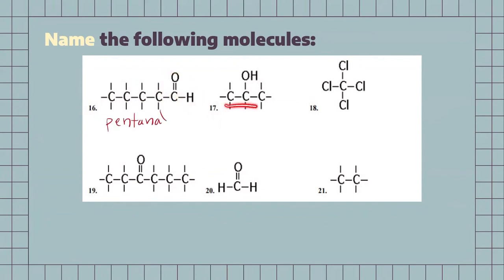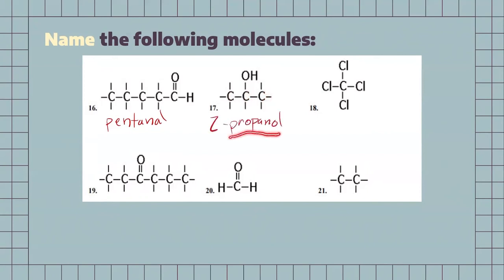For our next one, we have a three-carbon chain and we have our alcohol group there. And we have to specify on which carbon it is: 1, 2, 3. So, it's going to be on carbon 2. So, this is going to be 2-propanol.